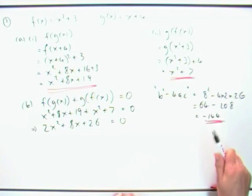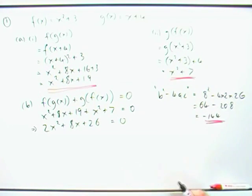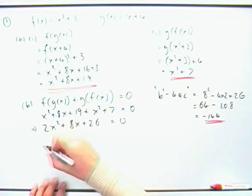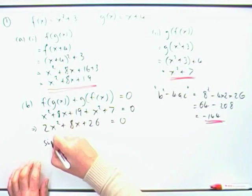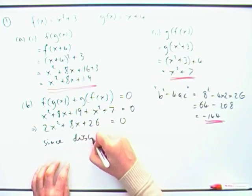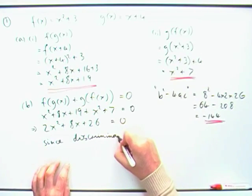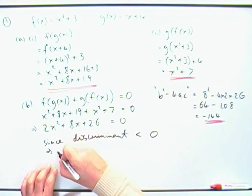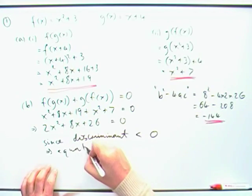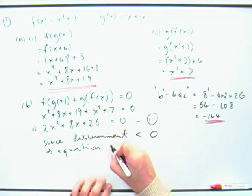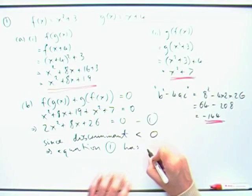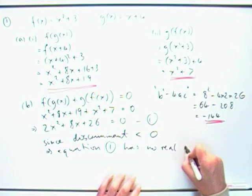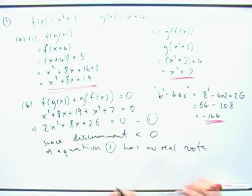But at 144, that's got some nice wee complex roots. Still, I didn't ask for that. So I'll have to make a statement now. So I'll have to say, since the discriminant, since the discriminant is less than 0, that means that the equation, maybe I'll give it a name, means equation 1 has no real roots. And there you go.